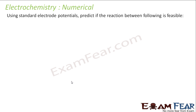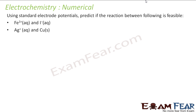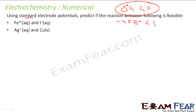Using standard electrode potential to determine if a reaction is feasible: a reaction is feasible if Gibbs free energy ΔG° is negative. Since ΔG° = −nFE°, and n and F are positive constants, ΔG° is negative only when E°_cell > 0. So if the standard EMF of the cell is positive, the reaction is feasible.